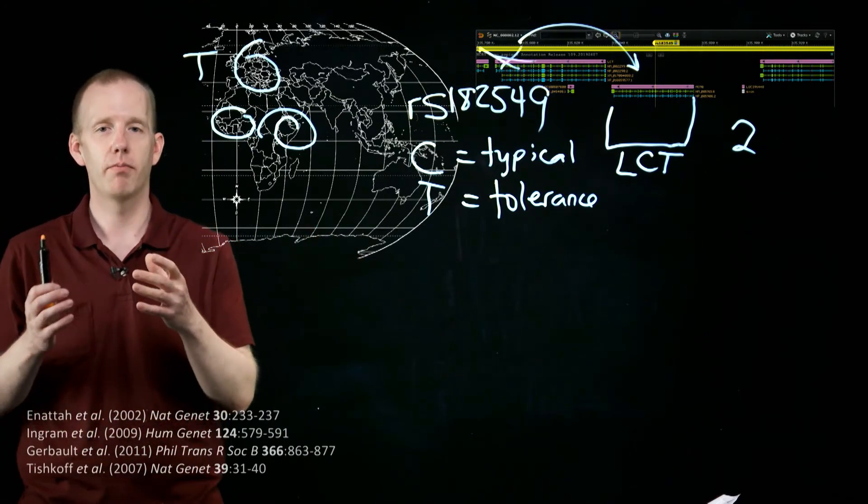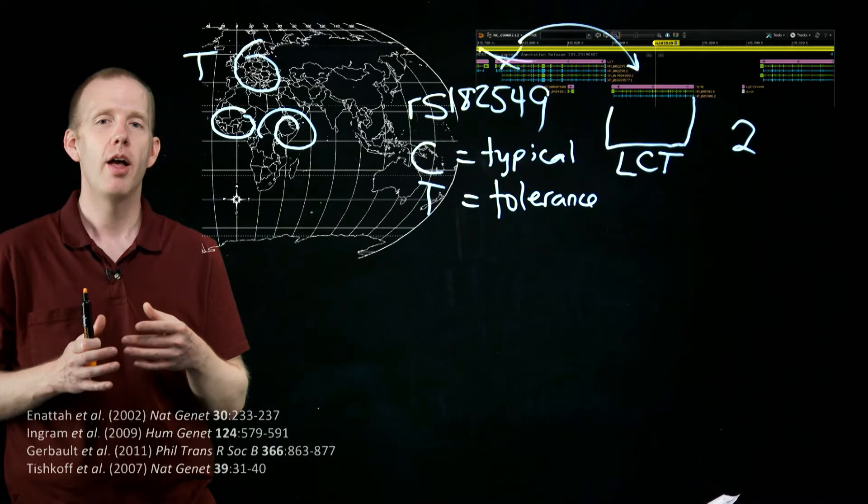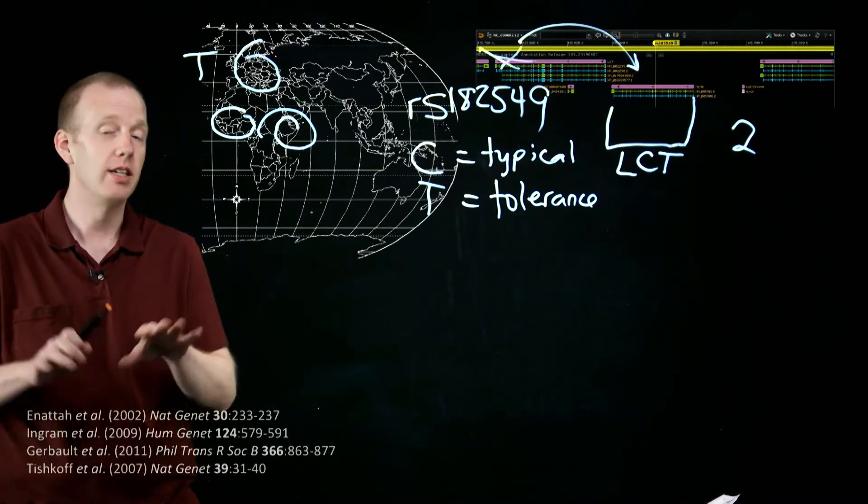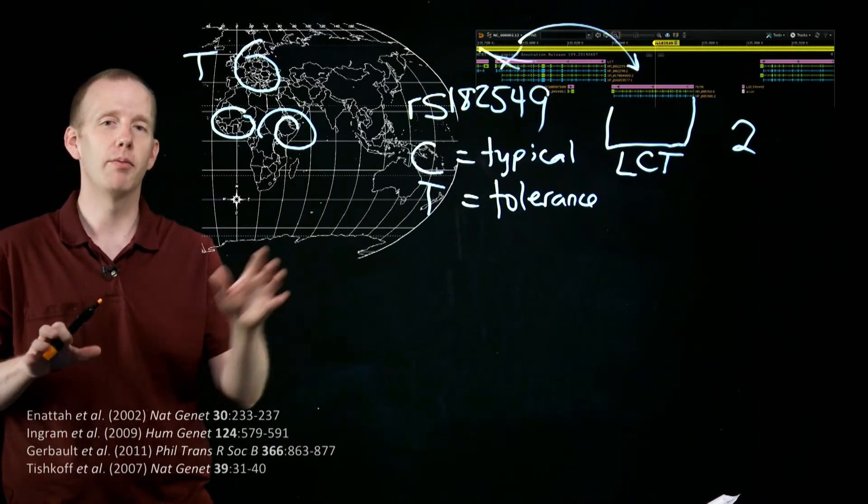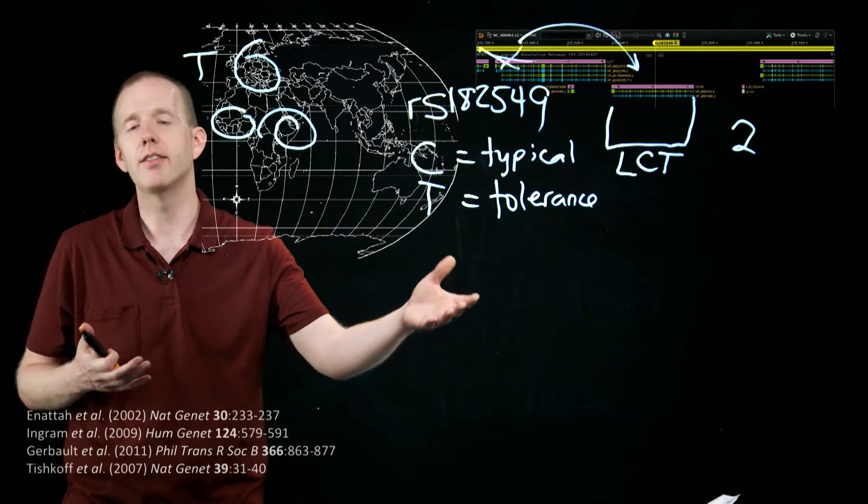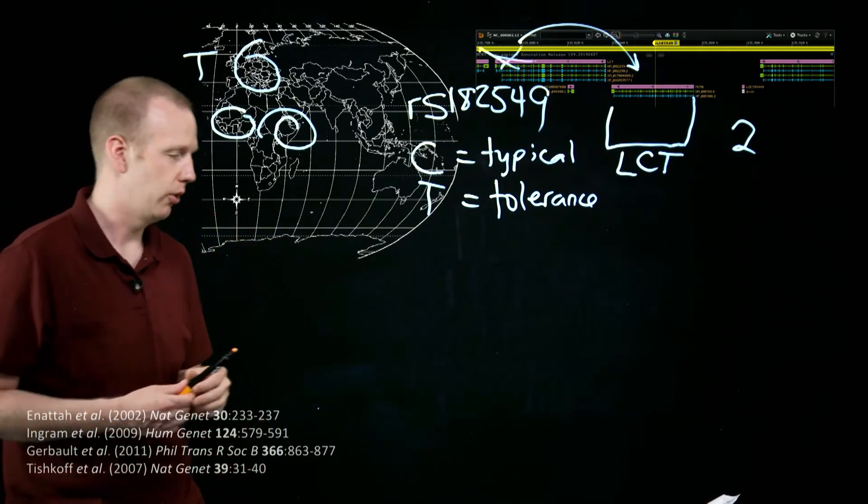proving that point that I made a minute or two ago, that different mutations in different parts of the genome can still make the same effect, the same trait, the production of lactase into adulthood.